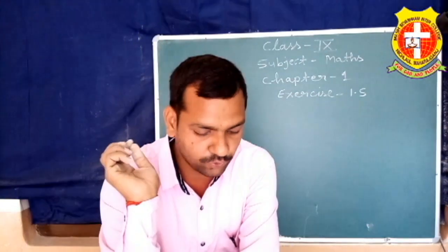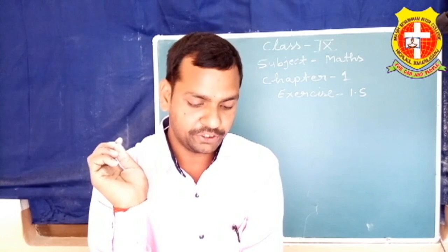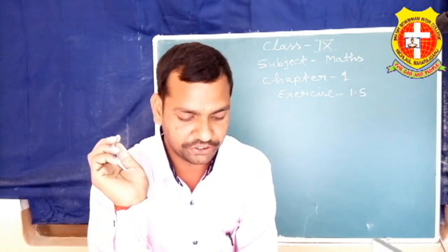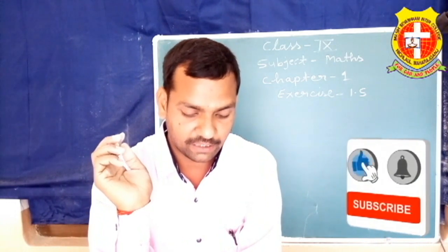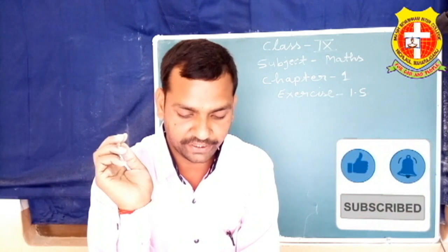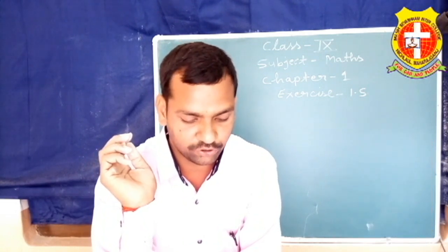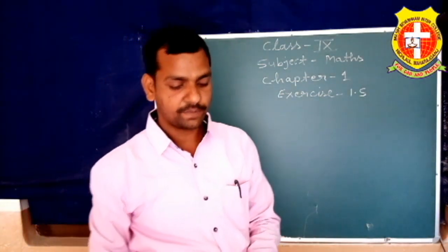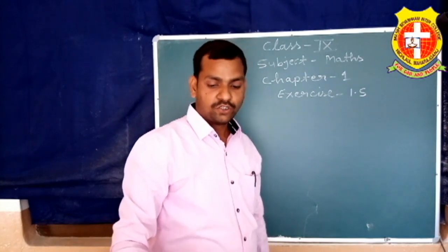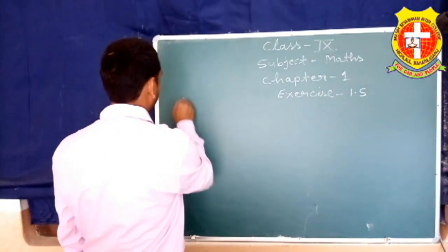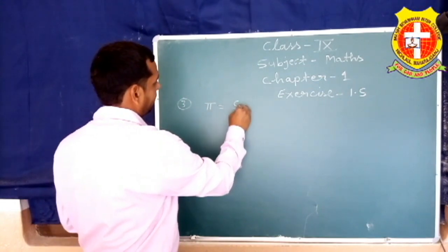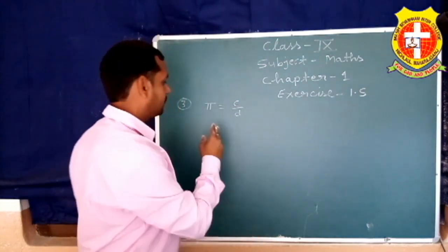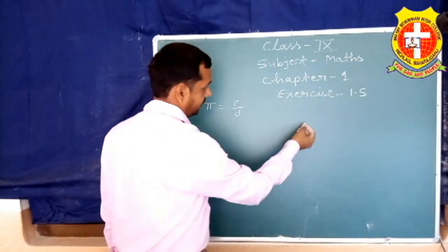Question number 3 में आपको याद होगा कि π को एक वृत्त की परिधि C और उसके व्यास D के अनुपात से परिभाषित किया जाता है — π = C/D। यह तथ्य अंतर्विरोध करता हुआ प्रतीत होता है कि π एक अपरिमेय संख्या है। इस अंतर्विरोध का निराकरण आप किस प्रकार करेंगे?